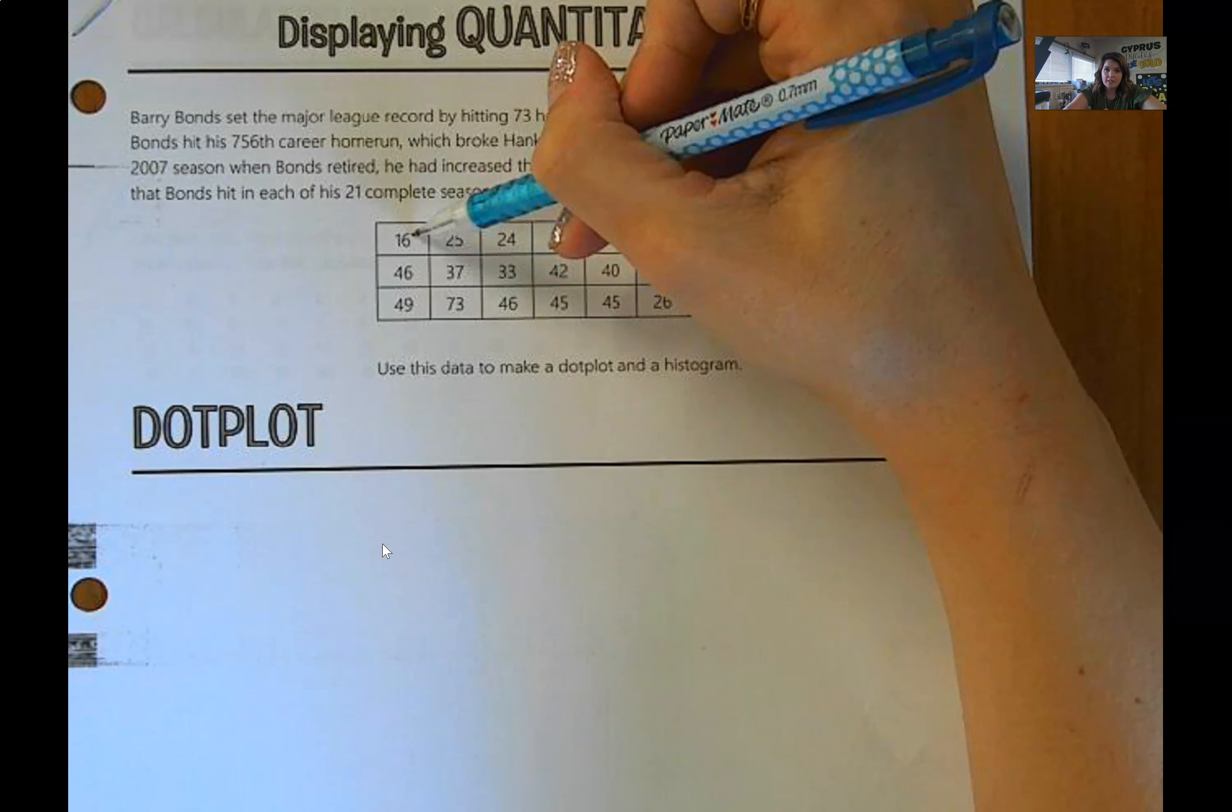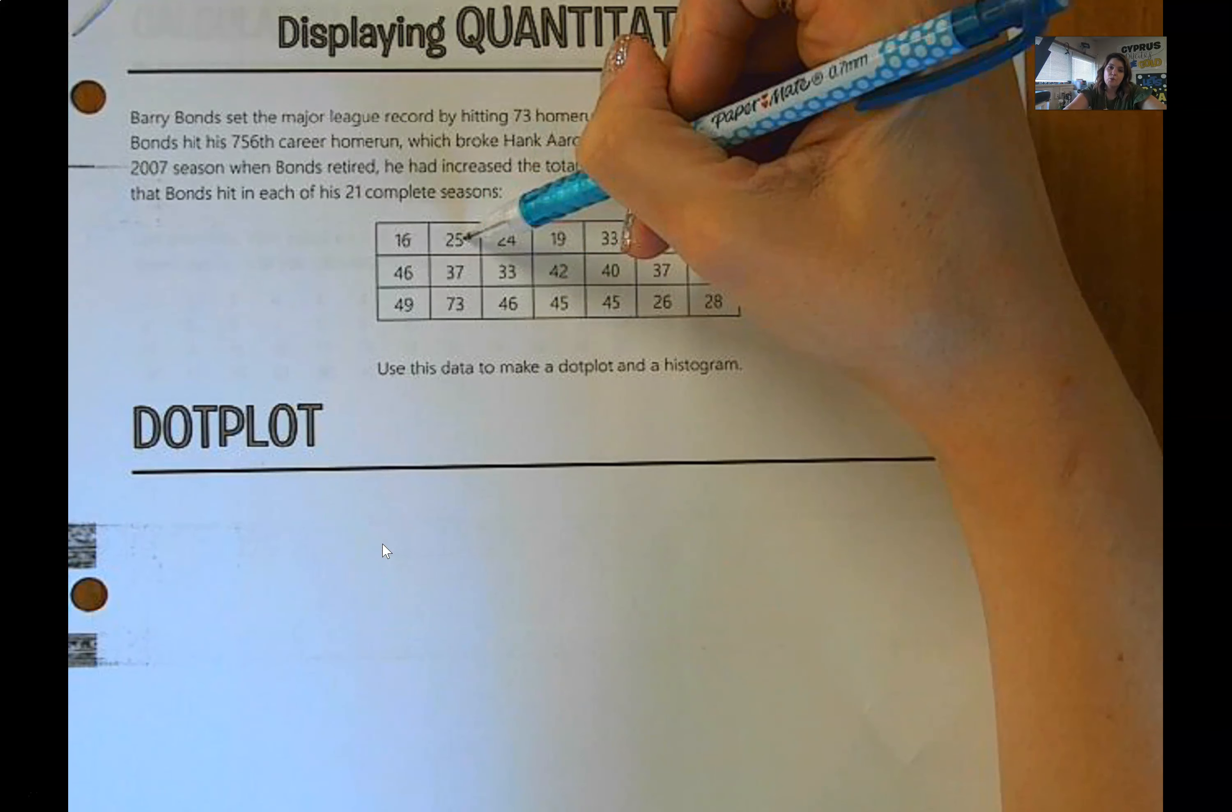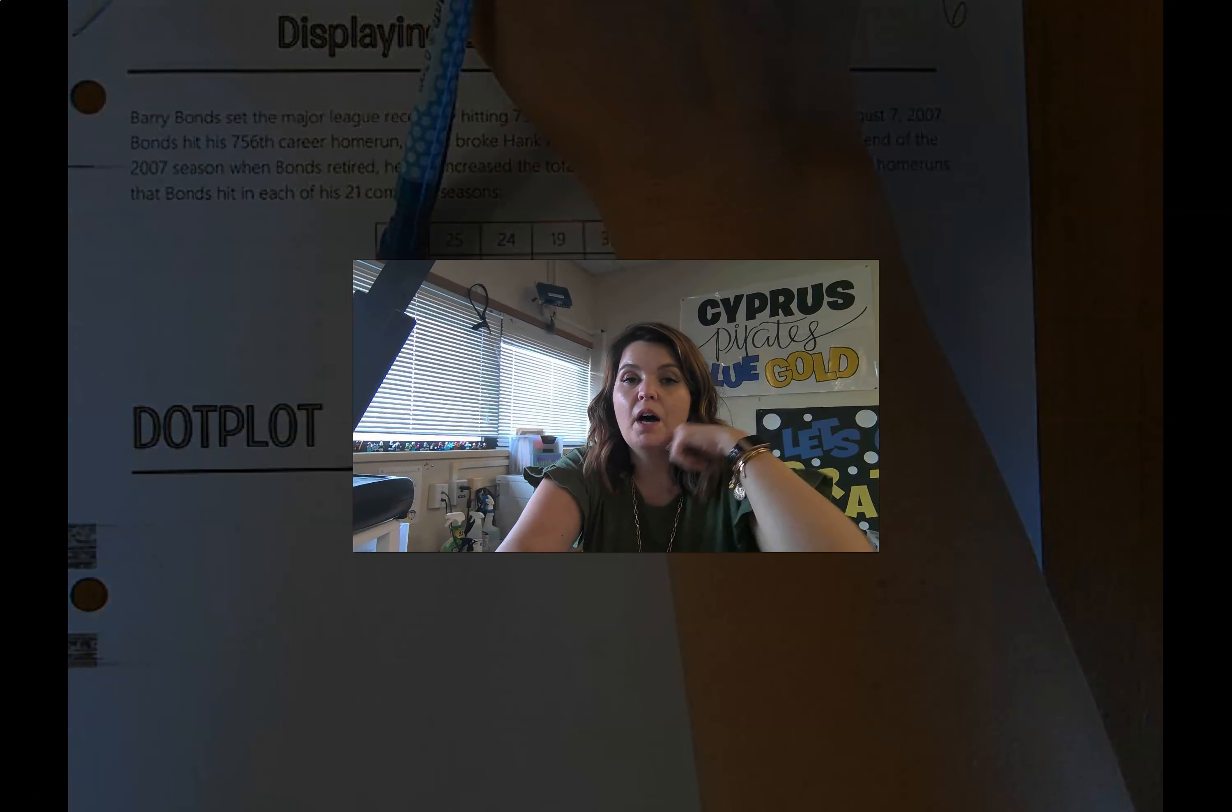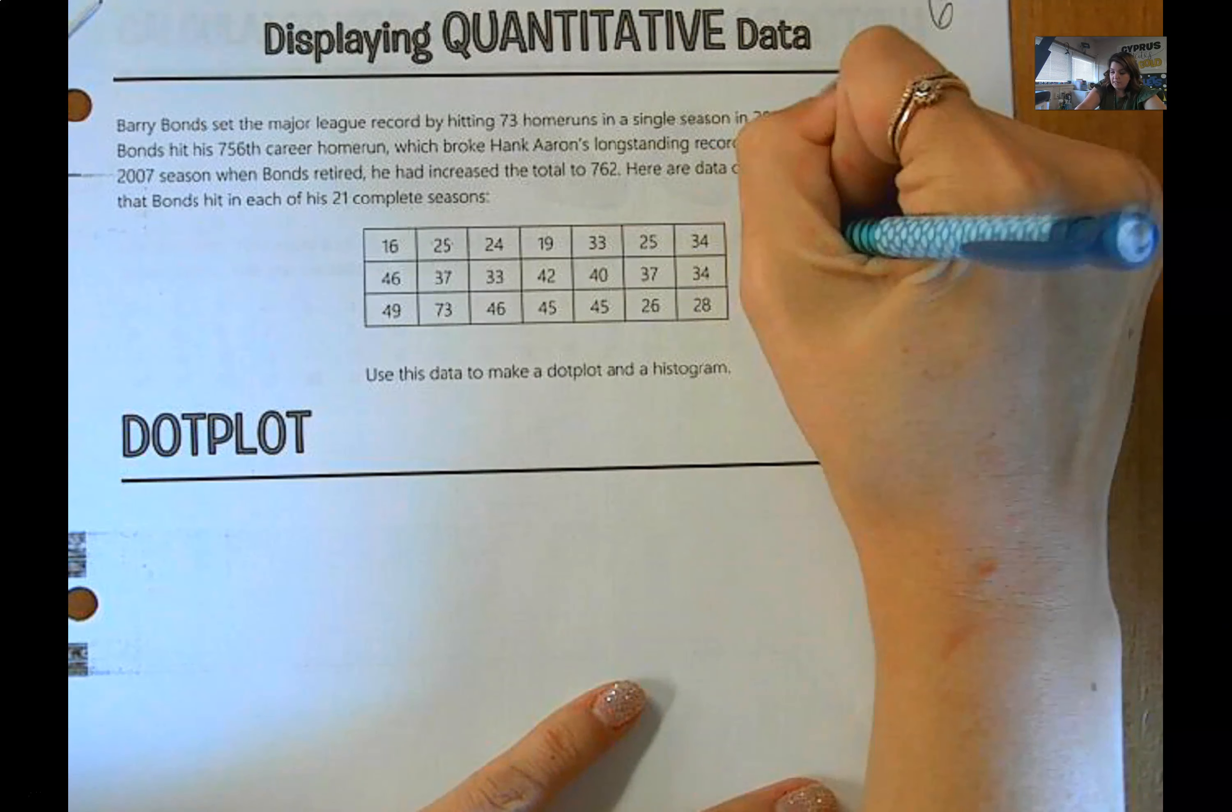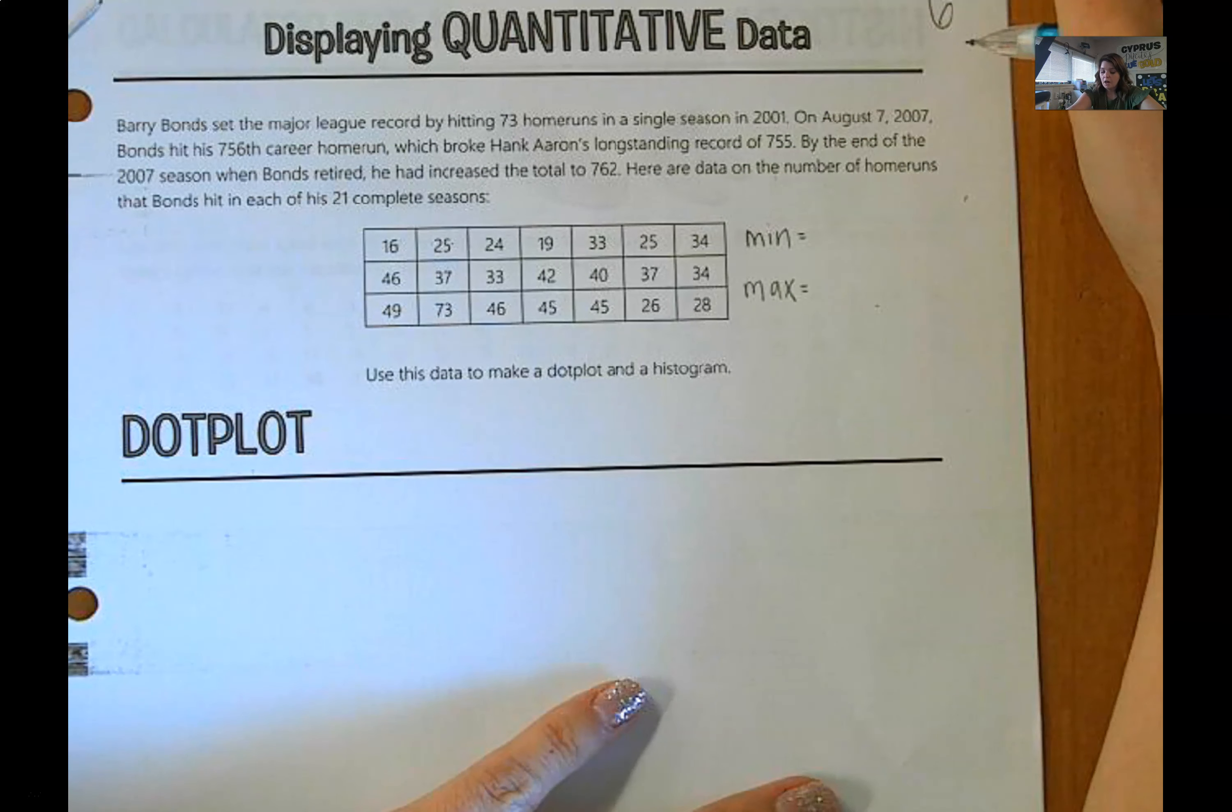Just to make sure that we're all on the same page. This 16 here represents one season where Bonds had 16 home runs, and then this one is one season where he had 25 home runs. So in order to make our dot plot, and the reason why we start with a dot plot is because dot plots are the most straightforward, the easiest graphs to make. It is very simple and quick, and you can do it if you have a large data set, and you can do it if you have a small data set. So dot plots are a really good plot for a lot of reasons, but one of the biggest is that it's quick and easy, and you can still see the shape of the data.